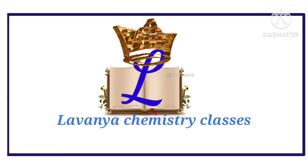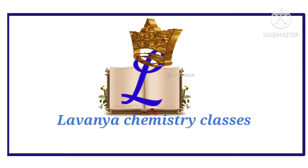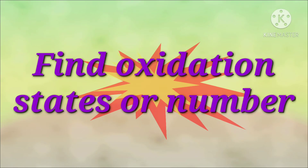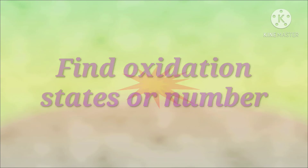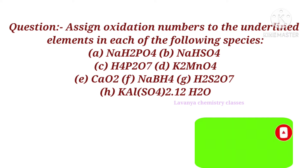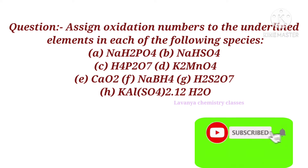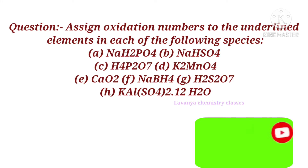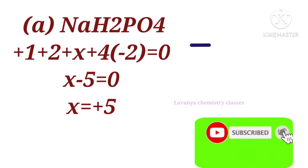Hi everyone, welcome to Lavanya Chemistry Classes. Today's topic is how to find out oxidation numbers. The question is: assign oxidation numbers to the underlined elements in each of the following species. The first problem: we have to find out the oxidation number of the phosphorus atom.